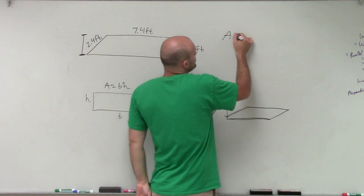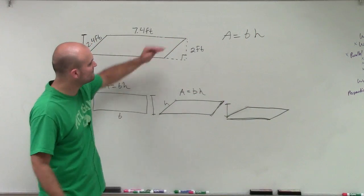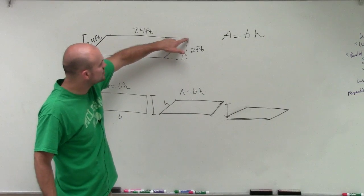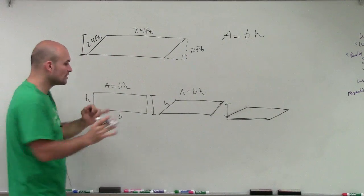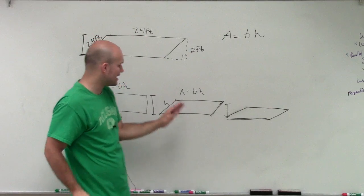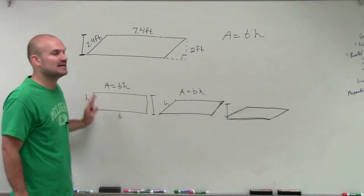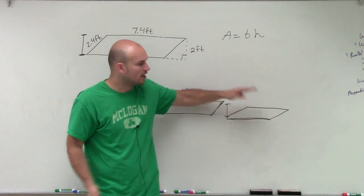So I'm still going to use my same formula, base times height. I just need to make sure I'm only finding the distance from the base to the height or base to the top, not the length of the side. That works when we're dealing with the rectangle. However, once you start turning to a parallelogram, this ends up not being your height anymore. As you can see, the height keeps on getting shrunk lower and lower.